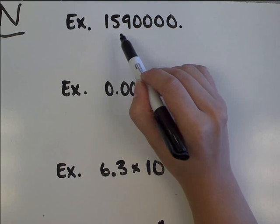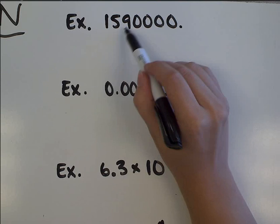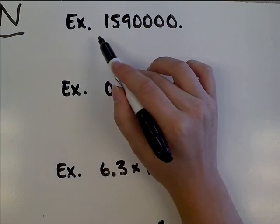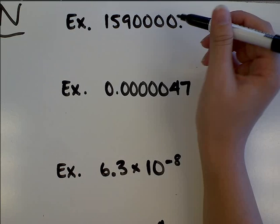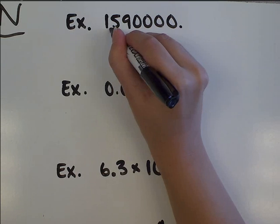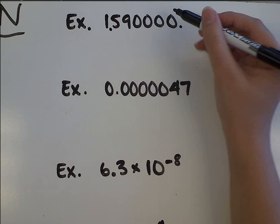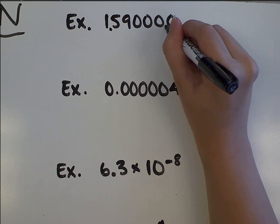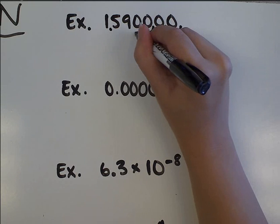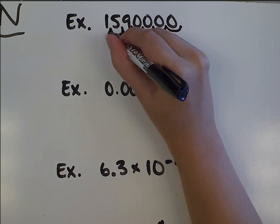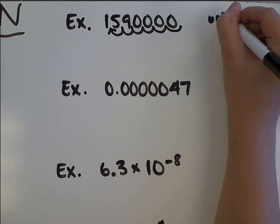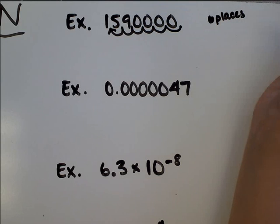So that way I'll end up with a number that only has one digit before the decimal point like I want. So I'm trying to get my decimal point over here so I end up with 1.59. I'm going to go 1, 2, 3, 4, 5, 6. I moved it over 6 places.